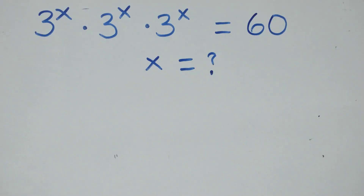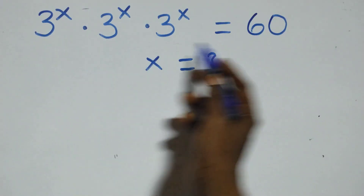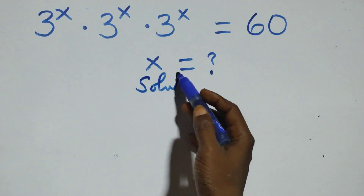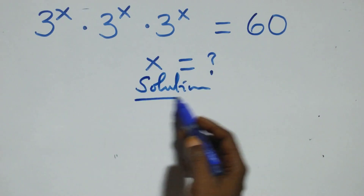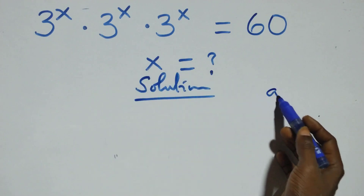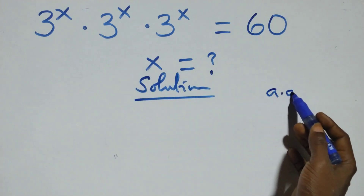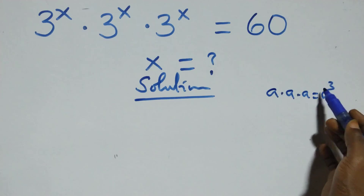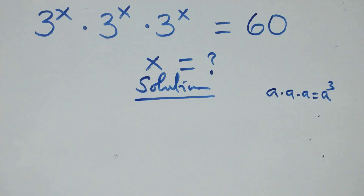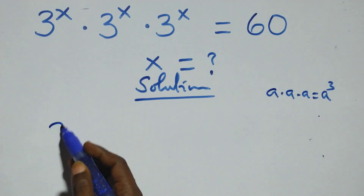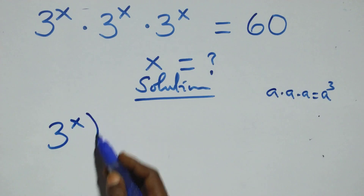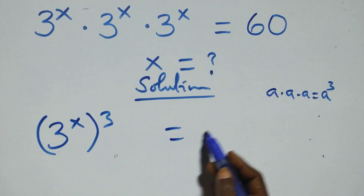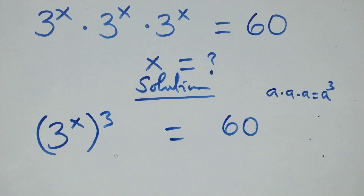Hello, you are welcome. How to solve this nice explanation equation solution from here. What we have here is as follows: A times A times A, we can write this as A raised to power 3. Also here we can write this as 3 raised to power x, or raised to power 3, then equals to 60 from here.